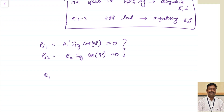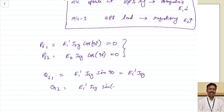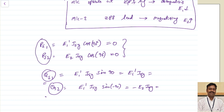Coming to the reactive power: the synchronizing reactive power Qs1 equals E1 dash into ISy into sin of the angle, which becomes sin 90 = E1 dash into ISy. And Qs2 equals E2 into ISy into sin of minus 90 degrees, which equals minus E2 into ISy. The synchronizing reactive power is positive for the first machine and negative for the second machine. Because of this, the EMF of one machine decreases and the second increases, affecting terminal voltage, with no change in active power.